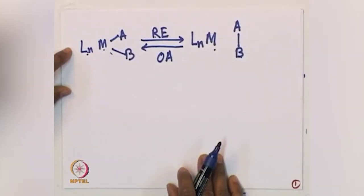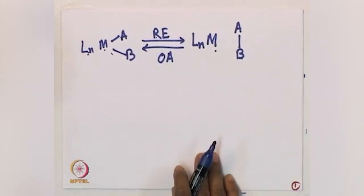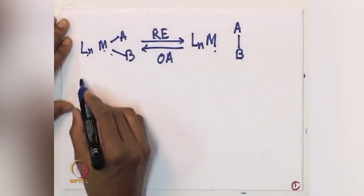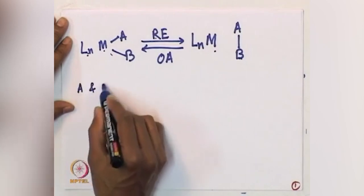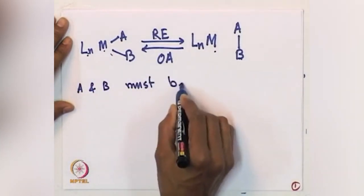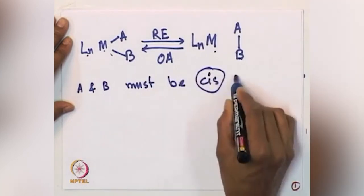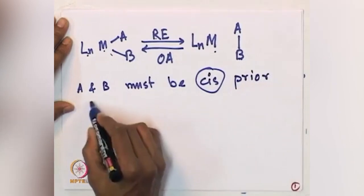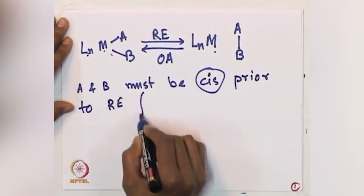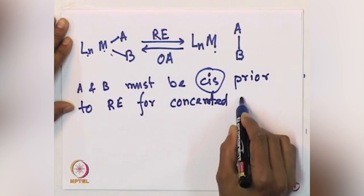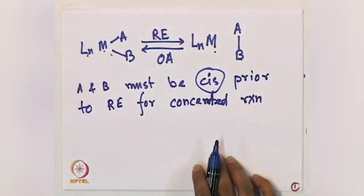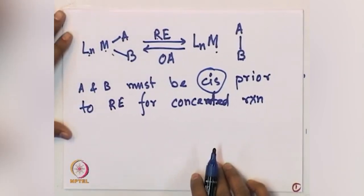The new bond formation between A and B is what reductive elimination accomplishes from an organometallic intermediate. One key requirement for concerted reductive elimination is that A and B must be cis to each other prior to the reaction.